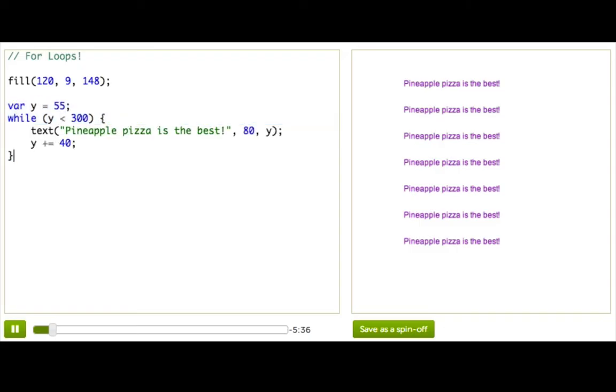So, just like you saw in intuitive while loops, we start out with this variable y, and we write a message using that location y. We say that we want to keep going as long as y is less than 300, and change y by 40 each time.